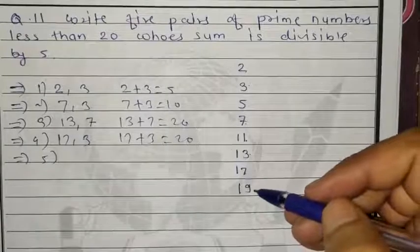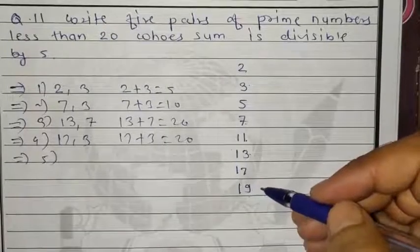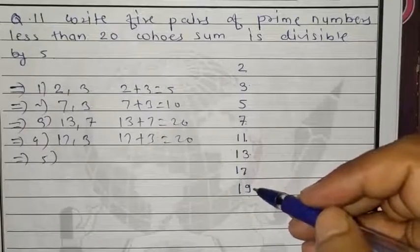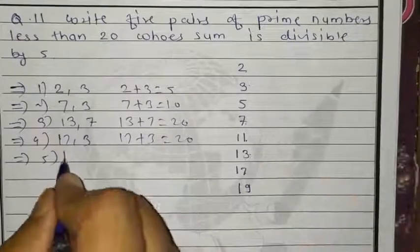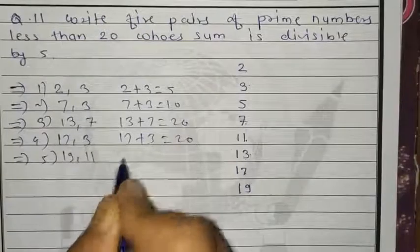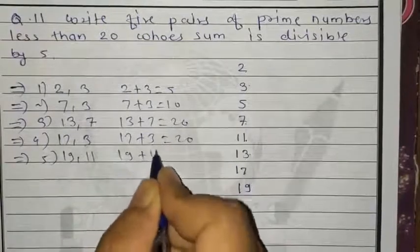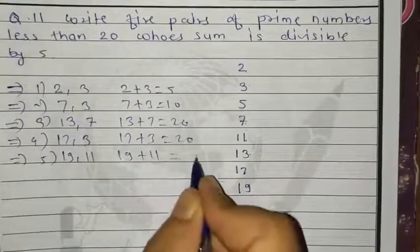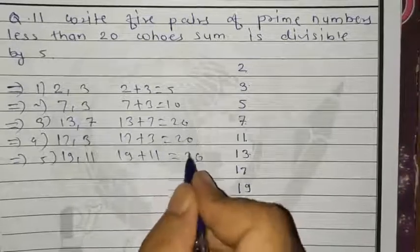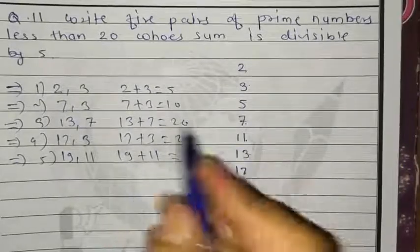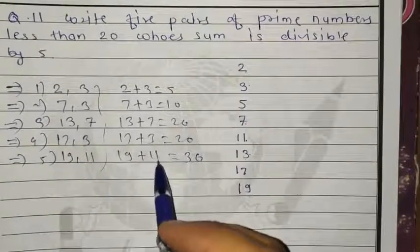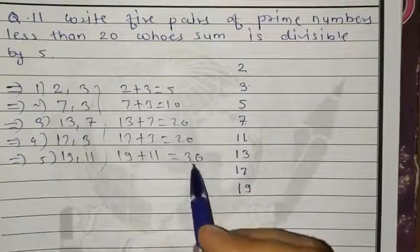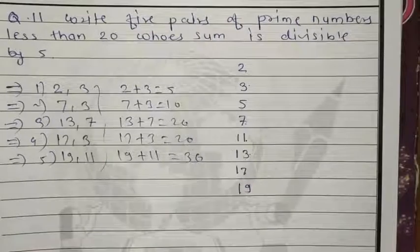Fifth pair: 19 and 11, because 19 plus 11 equals 30, which is divisible by 5. So we easily got the 5 pairs whose sums are all divisible by 5. This is the answer of question number 11.